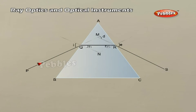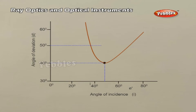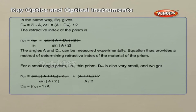Refraction through a prism. The figure shows the passage of light through a triangular prism ABC. The angles of incidence and refraction at the first face AB are i and r₁, while the angle of incidence at the second face AC is r₂ and the angle of refraction or emergence is e. The angle between the emergent ray RS and the direction of the incident ray PQ is called the angle of deviation, sigma. In the quadrilateral AQNR, two of the angles at vertices Q and R are right angles; therefore, the sum of the other angles of the quadrilateral is 180 degrees. The angle of deviation depends on the angle of incidence. A plot between the angle of deviation and the angle of incidence is shown in the figure. In general, for any given value of sigma, there correspond two values of i and hence of e. From the above equation, we can imply that thin prisms do not deviate much.